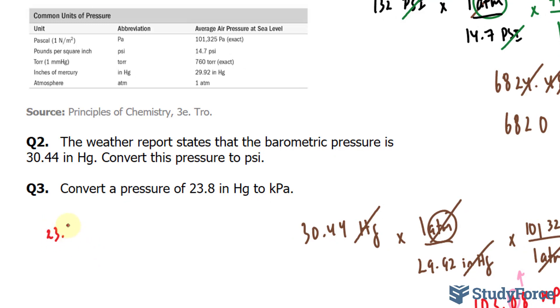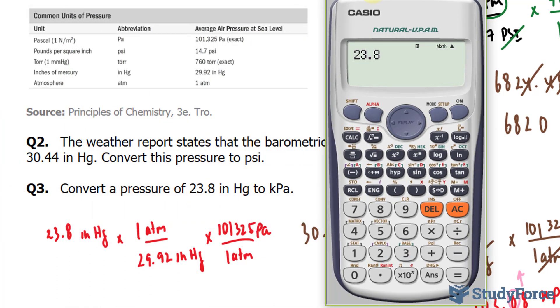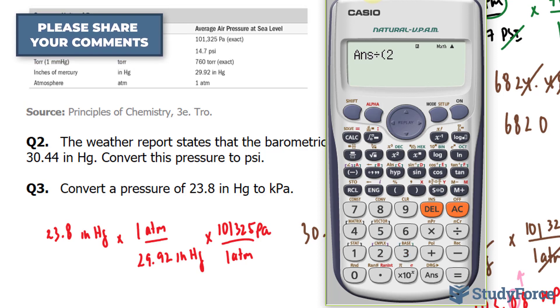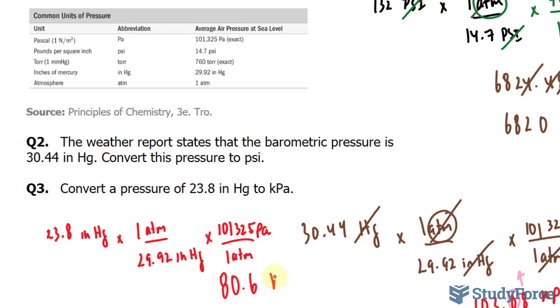Here's how it's done. Let's start with 23.8 inches of mercury times, and I'll follow the same playbook as this, 1 atm per 29.92 inches of mercury multiplied by the same thing as before, and then we divide what we get by 1,000. I won't write that down because I'm running out of space, but you know what I mean. So I have 23.8 multiplied by 101,325, divided by 29.92 times 1,000. And this gives us a total of 80.59. Since it's three significant figures, I'm going to round this up into 80.6 kPa.